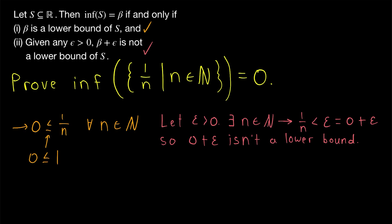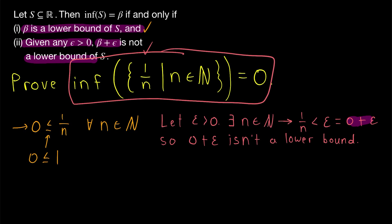And so we've proven our second condition. We proved that zero is a lower bound of the set, and we proved that given any positive real number, if we add that real number to zero, we will no longer have a lower bound of our set. Thus, by definition, the infimum of our set is zero. I hope this video helped you understand this simple example of proving the infimum of a set. Let me know in the comments if you have any questions, need anything clarified, or have any other video requests. Thank you very much for watching. I'll see you next time, and be sure to subscribe for the swankiest math lessons on the internet.